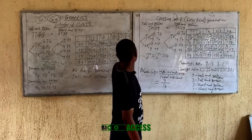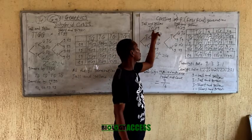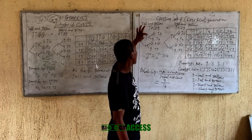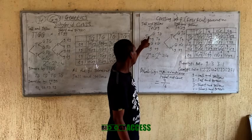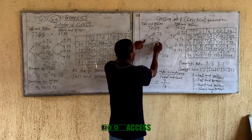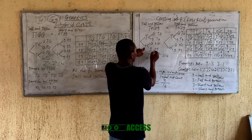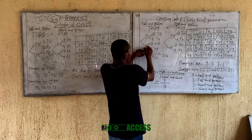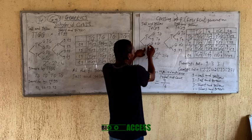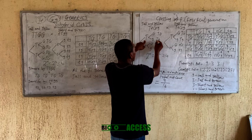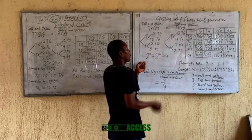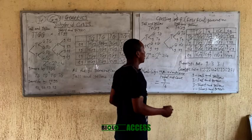Now we cross the F1 generation. These offspring are all TtGg. To find the gametes: I take capital T and small t, separate them, then attach capital G and small g to each one. The four gametes produced are TG, Tg, tG, and tg. The formula confirms 2 raised to power 2 equals 4 gametes. You repeat this for the second parent and get the same four gametes.